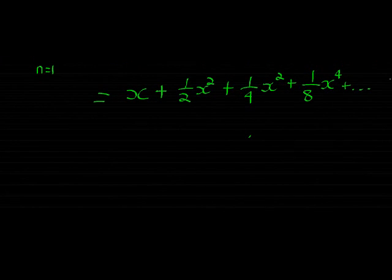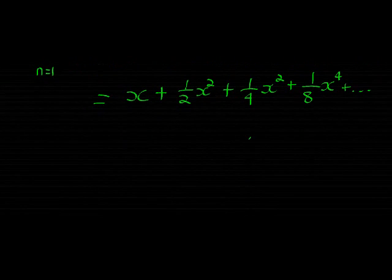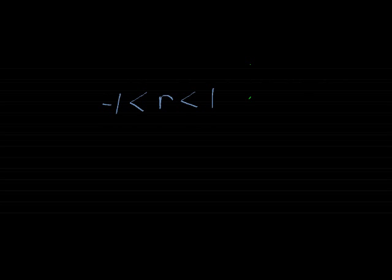And they're asking us in the first question, for which values of x will the series converge? Well, what are they asking us? They're asking us that our series must converge. We know, for a geometric, the series can only converge if my constant ratio is less than 1 but bigger than negative 1.